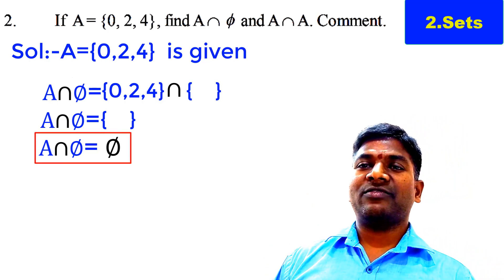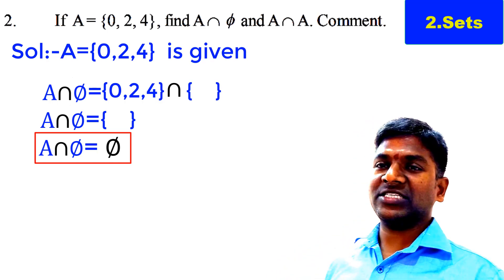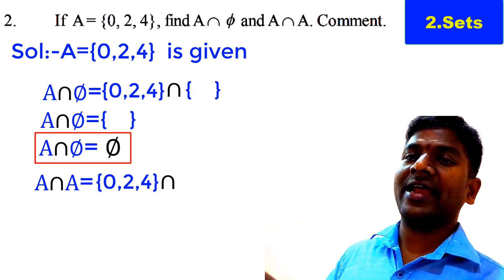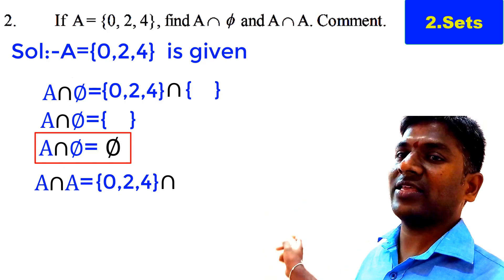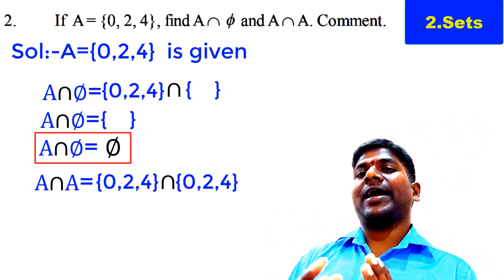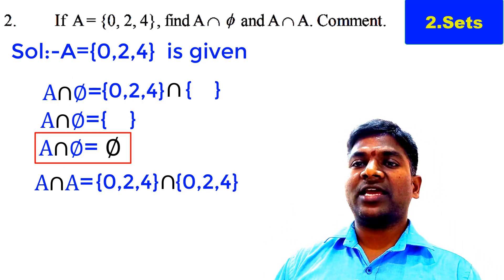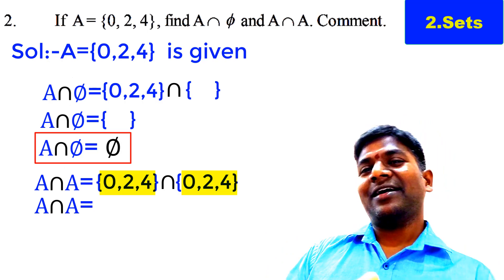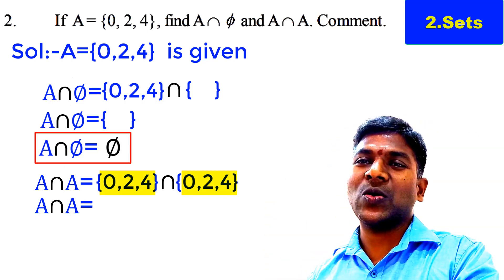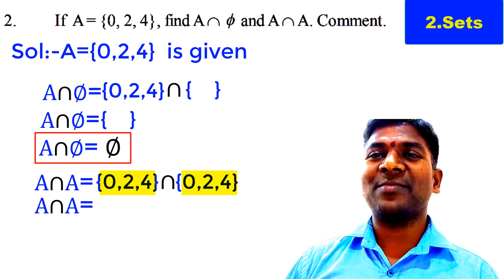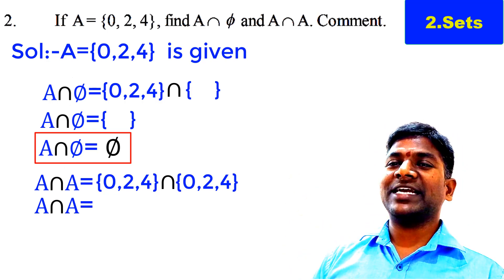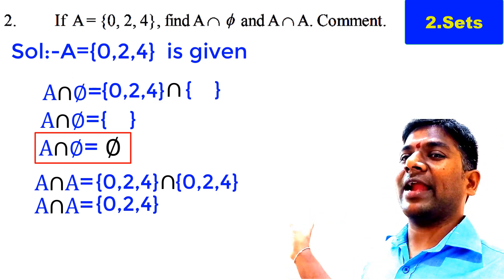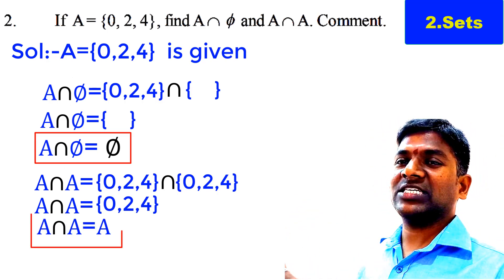Next, we find A intersection A. A intersection A: we write Set A with elements {0, 2, 4}, the intersection operation, and again Set A with elements {0, 2, 4}. A intersection A means the common elements of Set A with itself. All the elements of Set A are in this Set A as well, so all elements are common. Therefore, 0, 2, 4 are taken, and A intersection A = A.